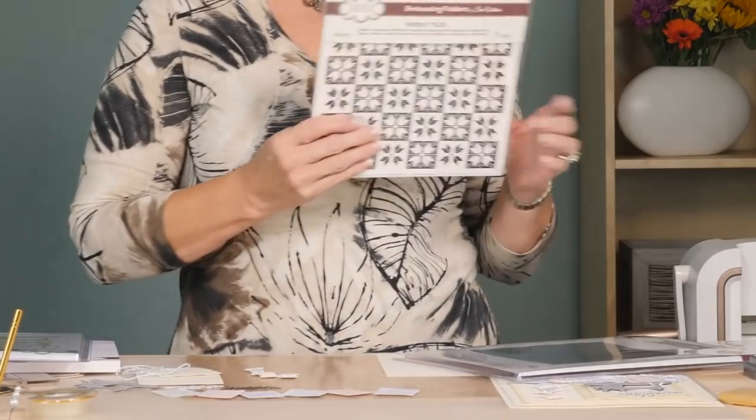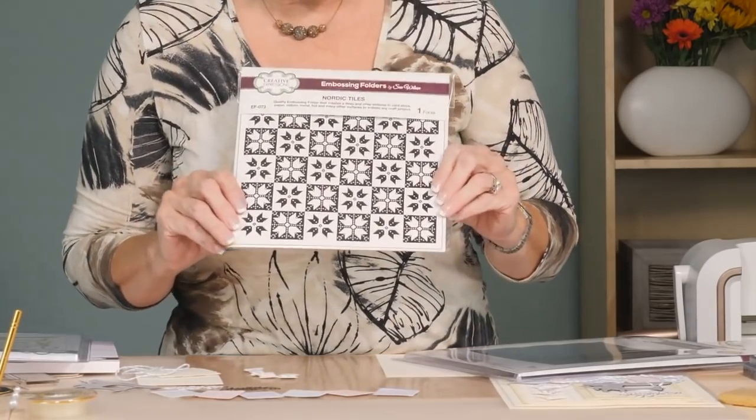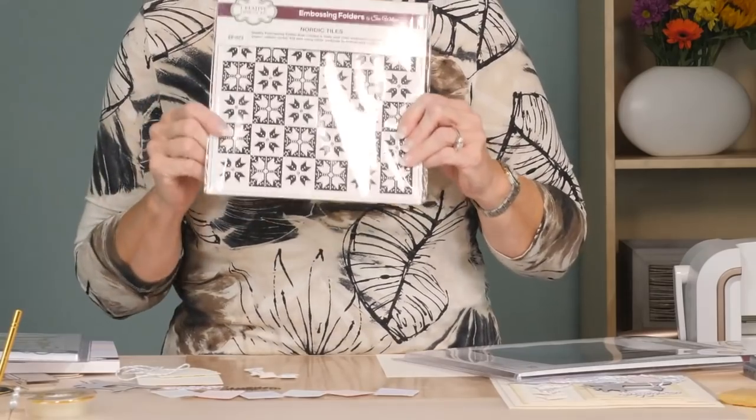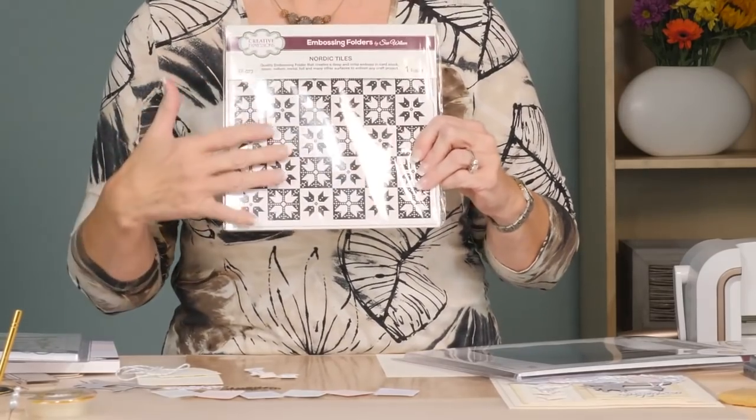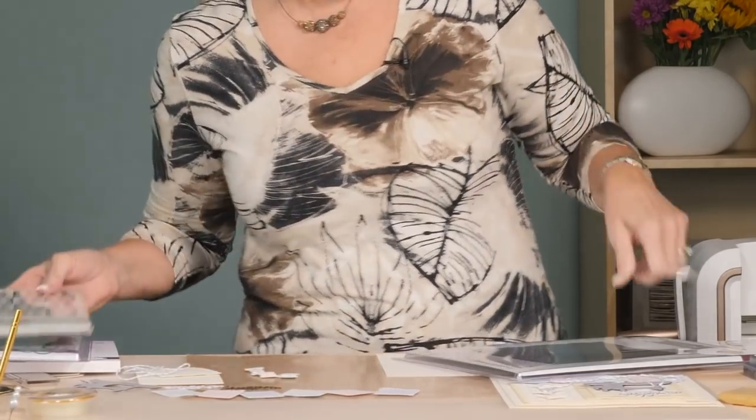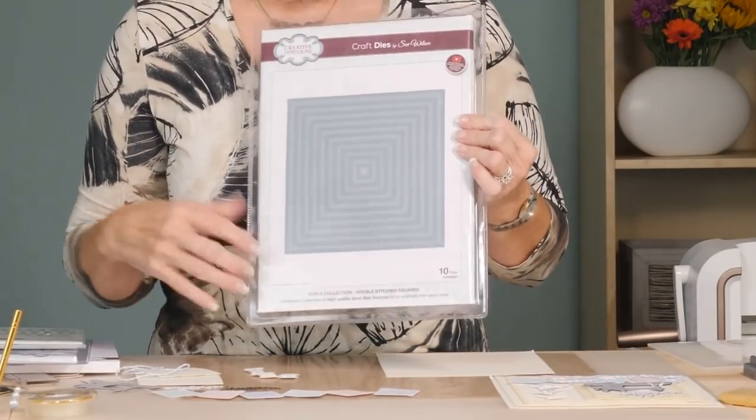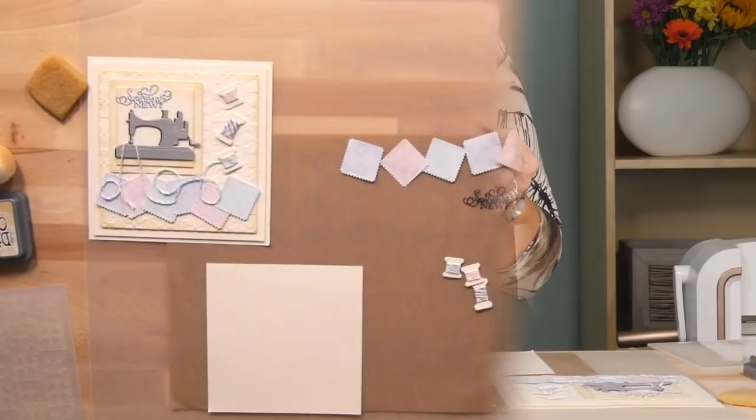And we're going to be doing some embossing with the Nordic tiles. Now while this may be a Christmas theme, it also looks really good as a quilting theme too. And we're going to use some of the double-stitched squares as mats and layers.